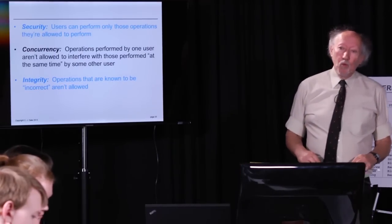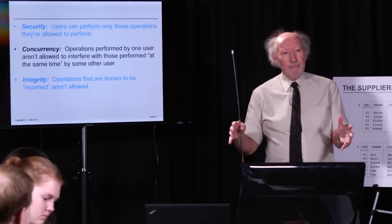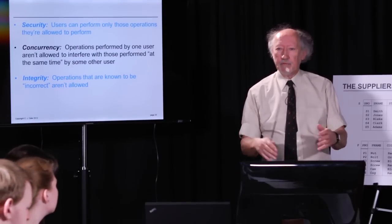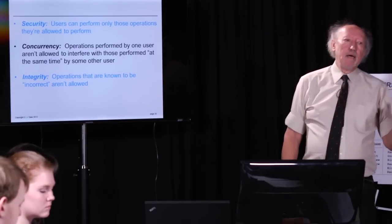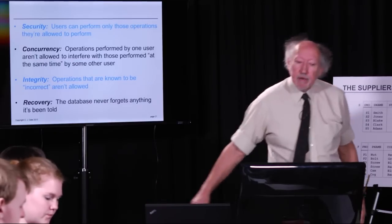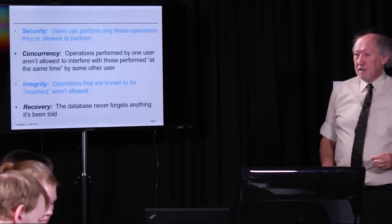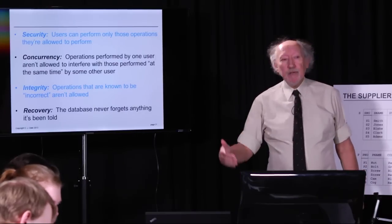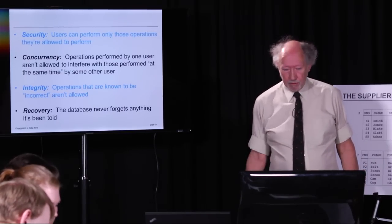Integrity controls: a database is a very important thing, and perhaps the most important aspect is that the data inside is correct, because you're going to base all kinds of decisions on what you learn from the database. Integrity controls make sure the data is correct insofar as possible — for example, if you try to say employee Joe has worked 200 hours this week, that's clearly impossible and the system should reject it. Recovery controls ensure the database must never forget anything it's been told — if you've put information into the database, you must be guaranteed it's there even if there's a system crash.